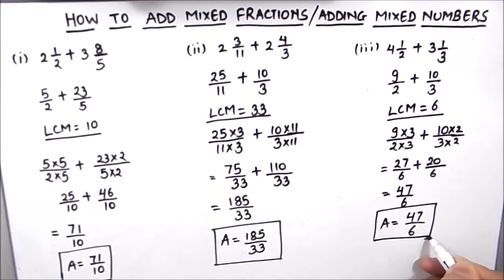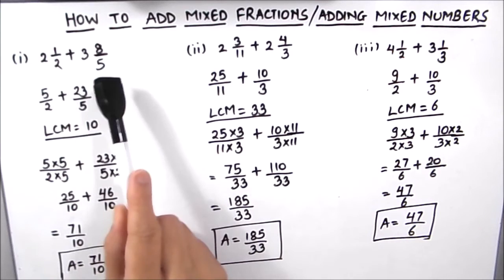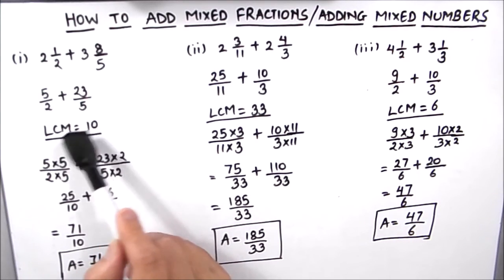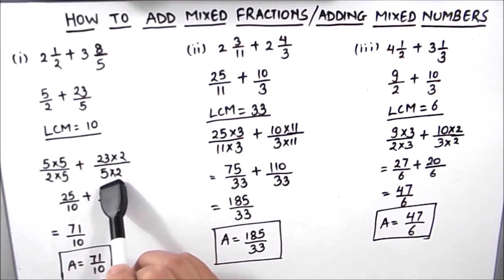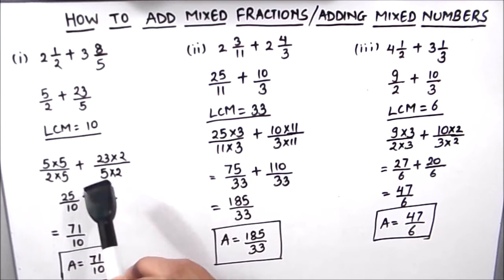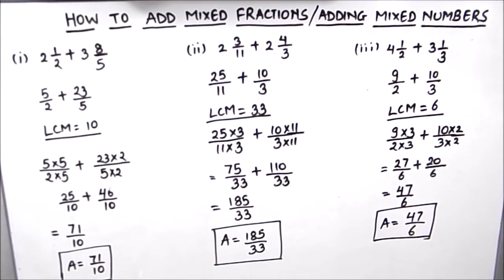We are going to box the answer. So this is how, by converting the mixed fraction into an improper fraction and taking the LCM to make the denominators of the two fractions equal, we can add mixed fractions. I hope this video is helpful to you. If you like the video, please hit the like button and subscribe to my channel for more math videos. Thanks for watching.